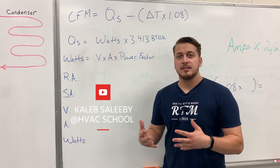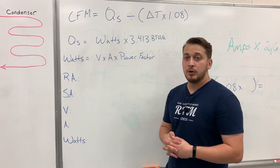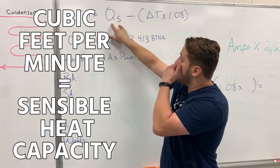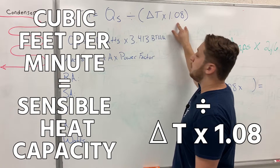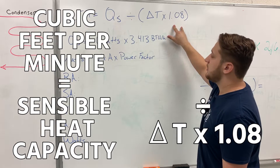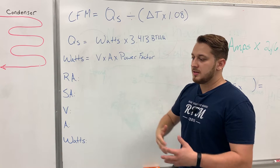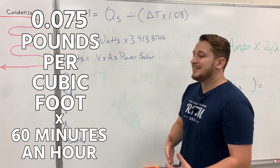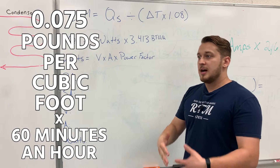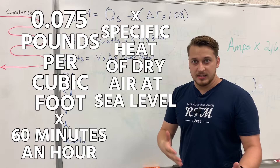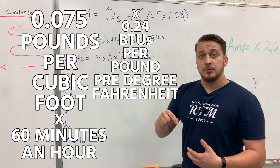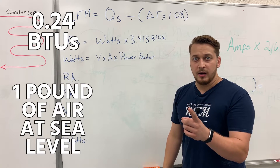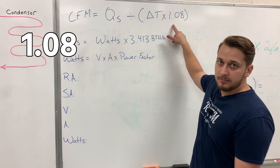We're going to take a look at the heat rise calculation for airflow. The formula is: CFM (cubic feet per minute) equals sensible heat capacity divided by delta T times 1.08. The 1.08 comes from a separate formula: air density at sea level (0.075 lb/ft³) times 60 minutes per hour times the specific heat of dry air (0.24 BTUs per pound per degree Fahrenheit). So it takes 0.24 BTUs to heat one pound of air one degree Fahrenheit — that's how we get 1.08.